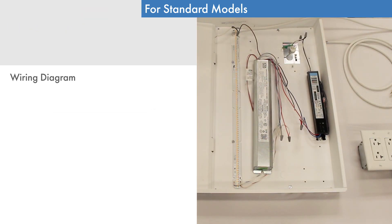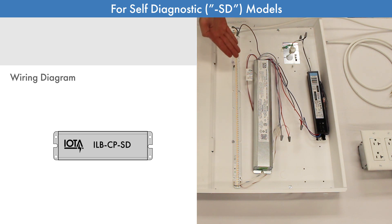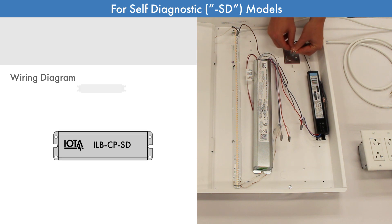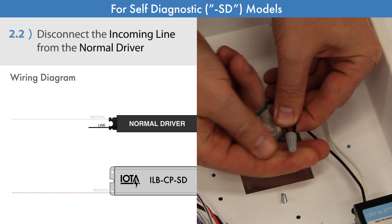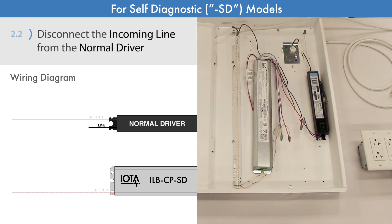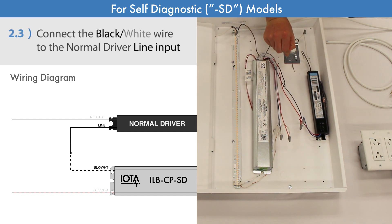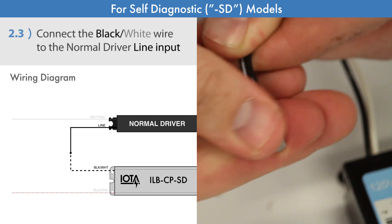Now let's switch to the wiring for the ILB-CP SD self-diagnostic units. Unlike standard ILB-CP models, the incoming neutral wire should remain connected to the normal driver, and instead we will disconnect the AC line input from the normal driver. Then, we will connect the black-white wire to this normal driver's AC line input.